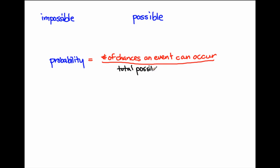Number of chances an event can occur all over the total possible outcomes. Otherwise known as the TPO.